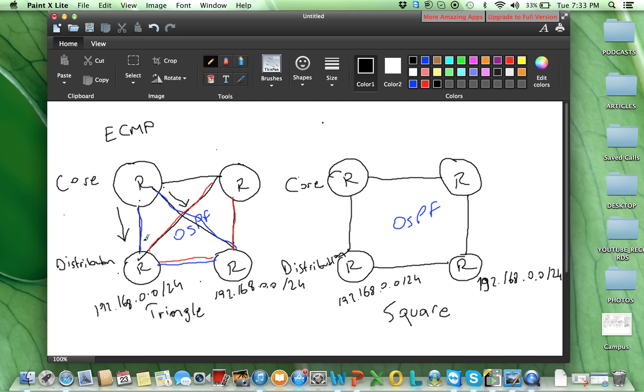this router will put this network through these two next hops, through these routers in the routing table and also forwarding table. So if I lose this link, if this link fails, this link still will stay in the routing and forwarding table. There will not be a convergence event here.